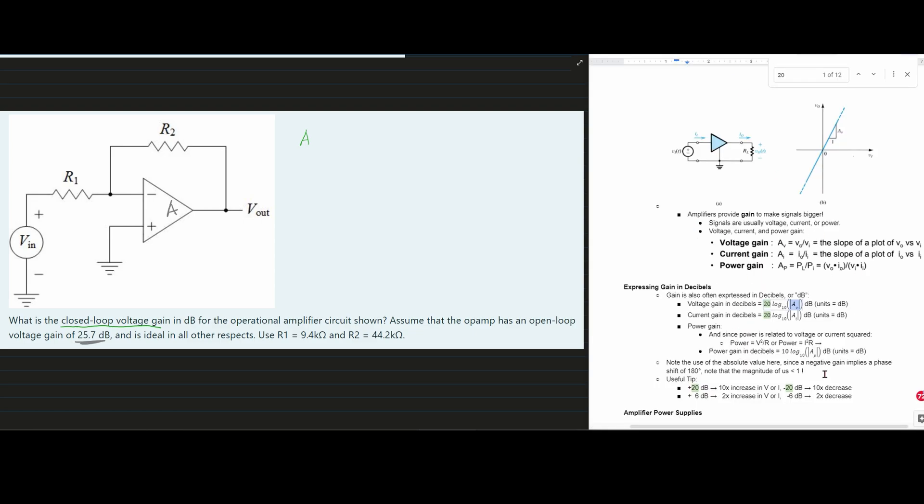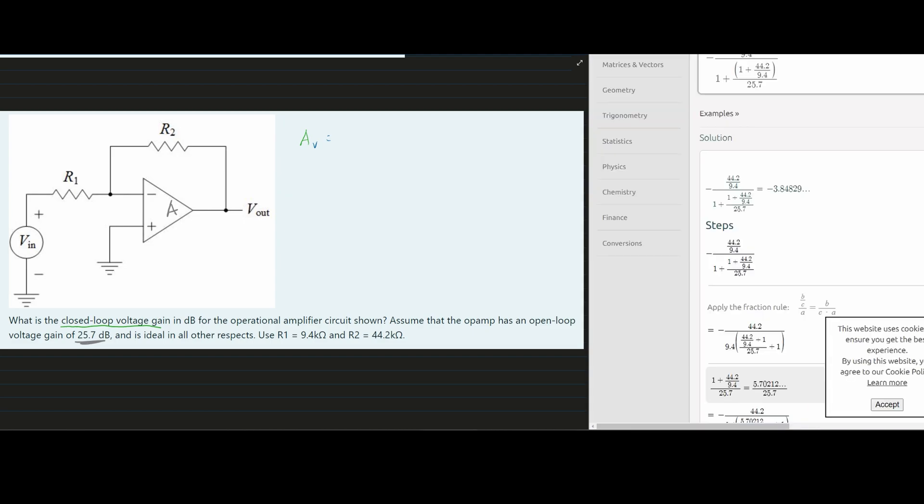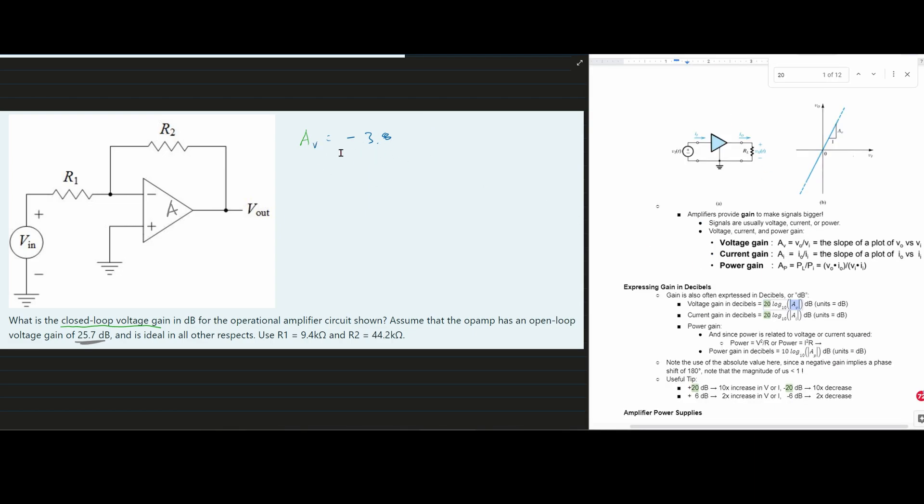Now we're going to take that negative 3.8 because that is what our Av is. And I'll write this down here. So for this problem, this equation, these numbers that we have here, we're going to have a negative 3.8 approximately. And then we're going to take this negative 3.8 because it's Av.